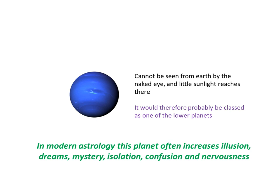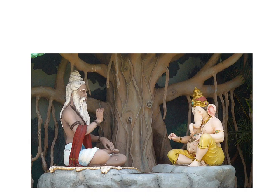In modern astrology, interestingly, this planet often increases illusion, dreams, mystery, isolation, confusion, and nervousness. This is a Kali Yuga trait, indeed, and at the beginning of Kali Yuga, we believe that Vedaviyasa, the great saint, spoke the Mahabharata to Ganesha, who was the scribe for this.